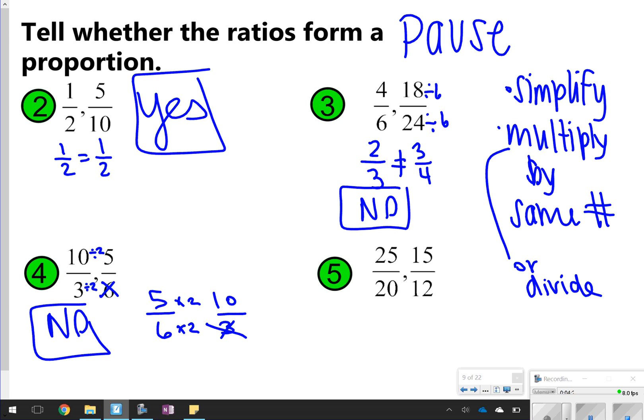And then number 5, again, I can simplify to see if that's going to give me the same fraction. 25 divided by 5 was 5/4. And then these two can be reduced by 3. That's also going to give me 5/4. Since they're equal, I'm going to say yes. Okay, how'd you do?